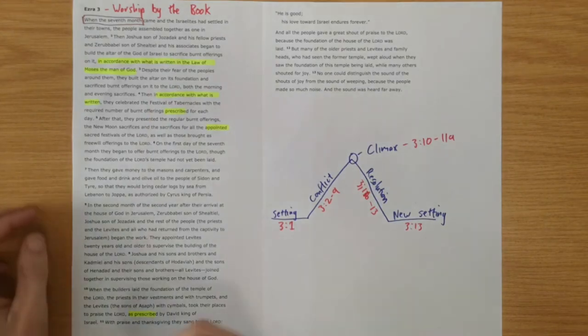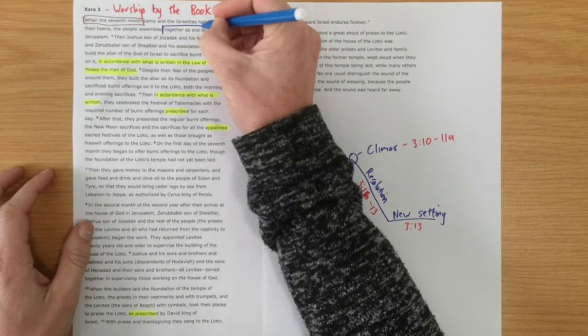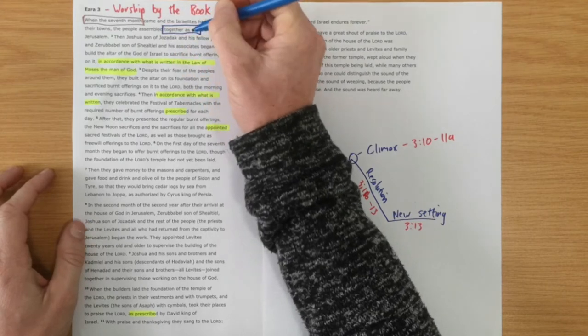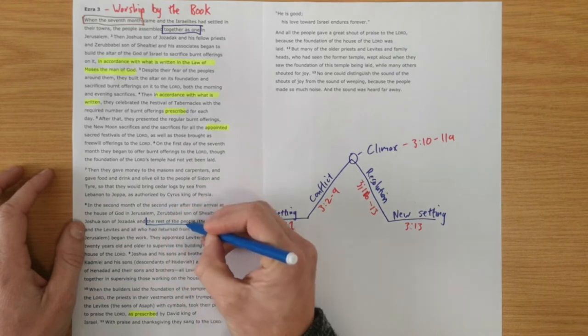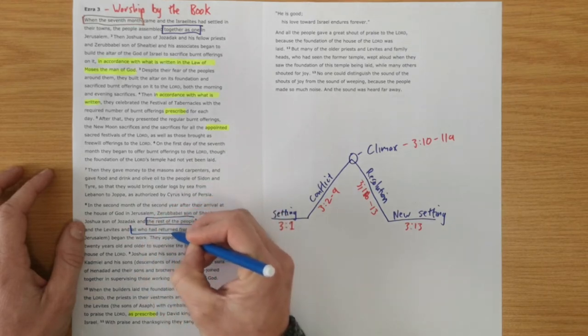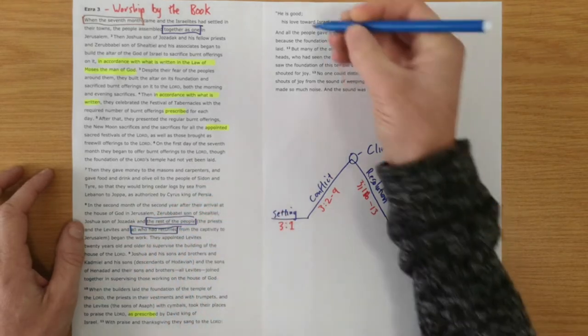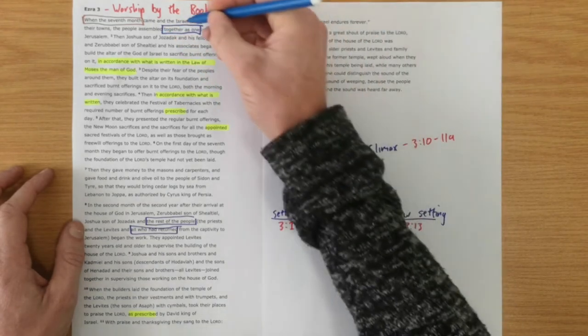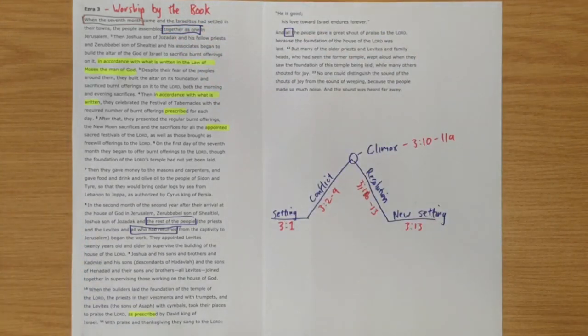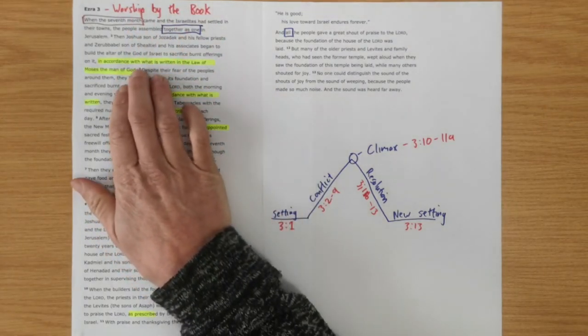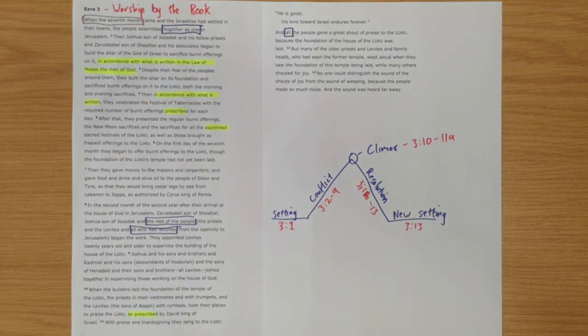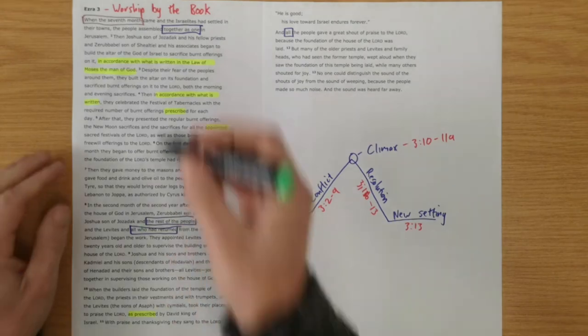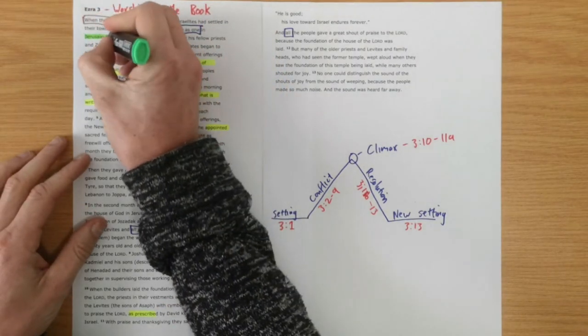We also see this repetition of together as one. We see here the rest of the people, all who had returned, again all the people. So there's very much a together, they're all in this together. So the key to them worshiping is by having a right knowledge of God and being in this together. They help each other to keep going. We see that they've all assembled as one in Jerusalem.